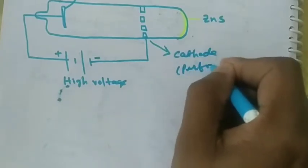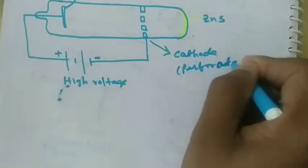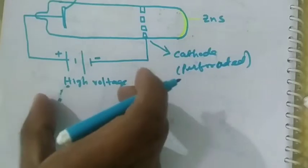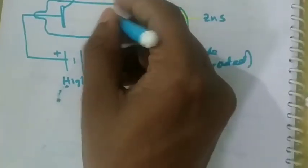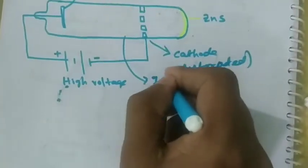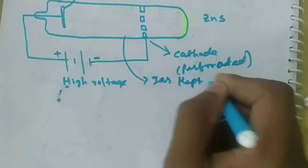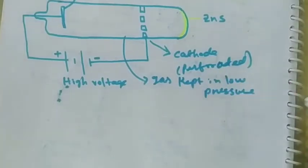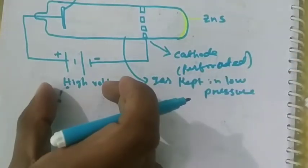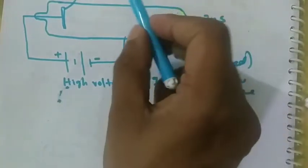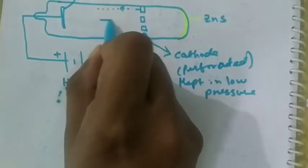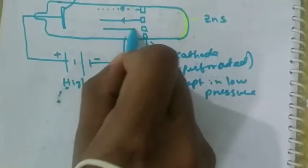This is perforated. This is the anode. This is the high voltage. This is the electrode in the discharge tube. The gas is kept at low pressure. When high voltage is applied, the cathode produces an invisible ray.